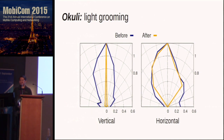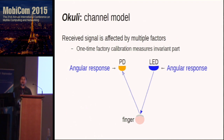Meanwhile, the horizontal FOV is mostly unchanged by the shroud. This is favorable because we want a large working area and thus a large horizontal field of view. We also need a fine-grained channel model to achieve localization. We first realize that the received signal is affected by multiple factors multiplied together. There are ones that are constant throughout time, such as the angular response of the PD and LED — these factors can be measured during one-time factory calibration.